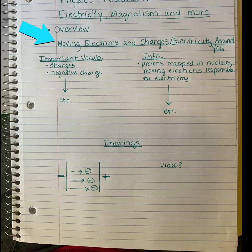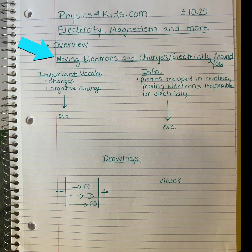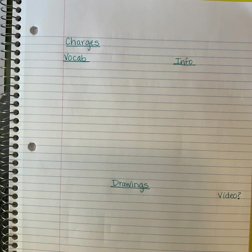If there is a video, then feel free to put video notes on the bottom right-hand side. This is what the second tab would look like without any notes: the topic charges, vocab, info, and drawings, and video notes on the bottom right.